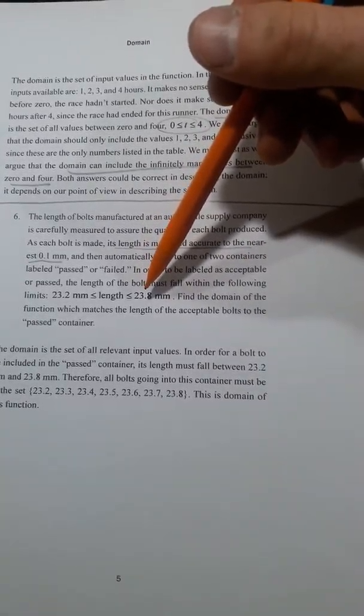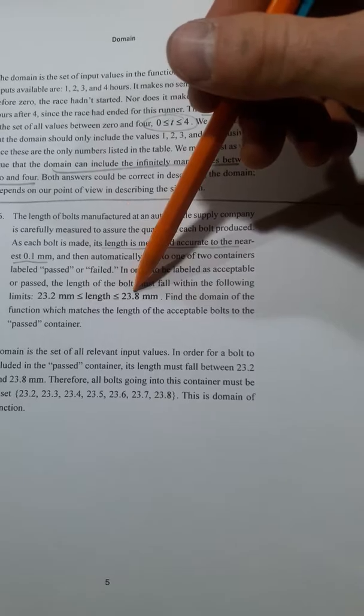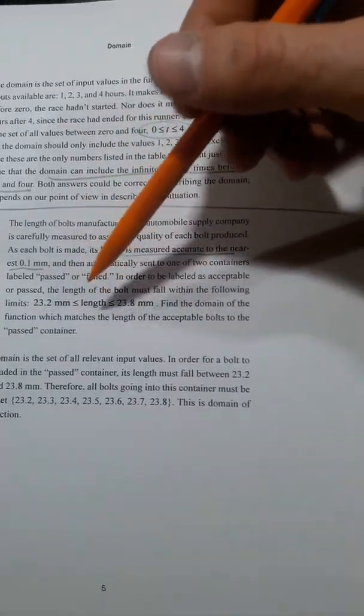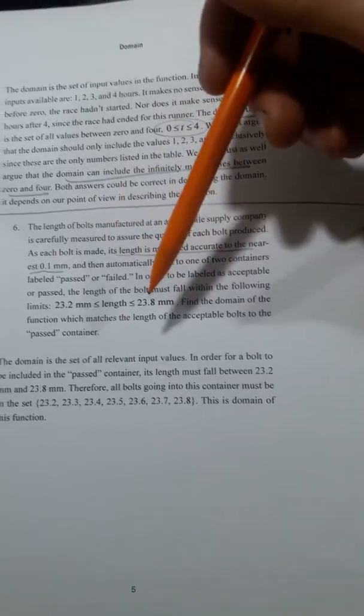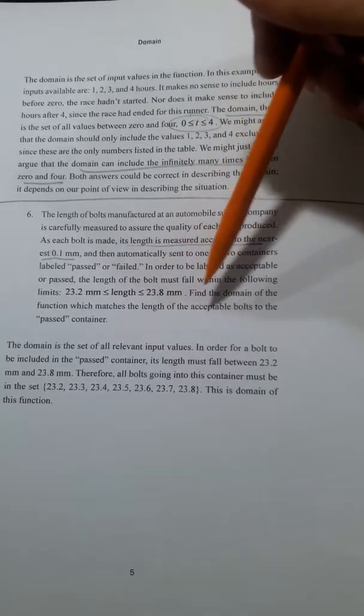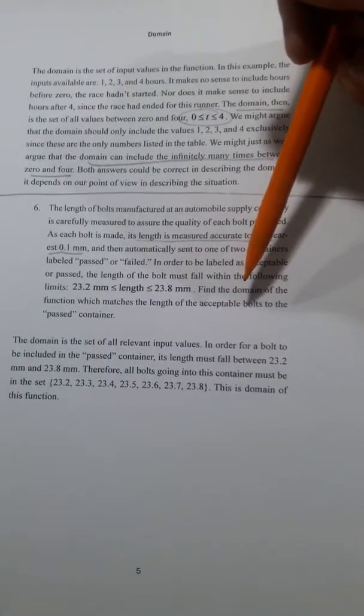It says they have two containers passed or failed, and it needs to be less than 23.8 and greater than 23.2 to be in the passed container. So it says, what are the domain of the function which matches the length in the past container?